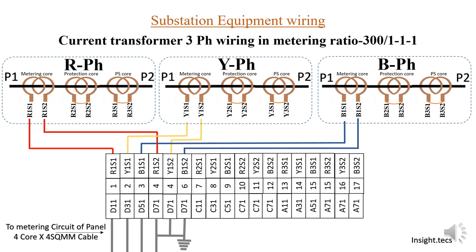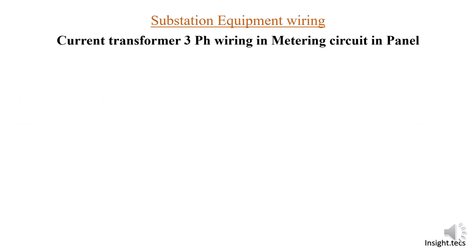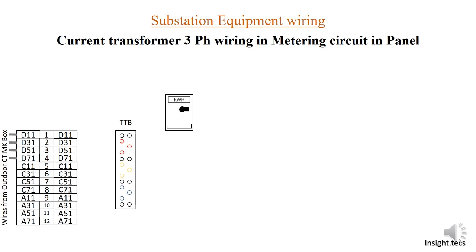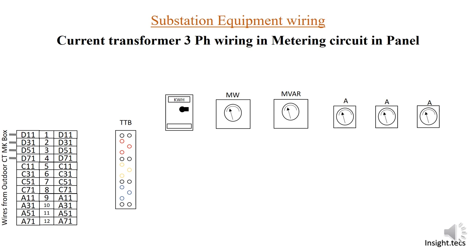In this video we are going to learn how these four wires are used inside the panel in the control room. The four wires coming from the current transformer in the yard enter the panel. The very first element in the wiring is the TTB, that is the test terminal block. Then there is the kWh meter, which is the energy meter, followed by the megawatt meter, the MVR meter, and the ampere meter to measure current.